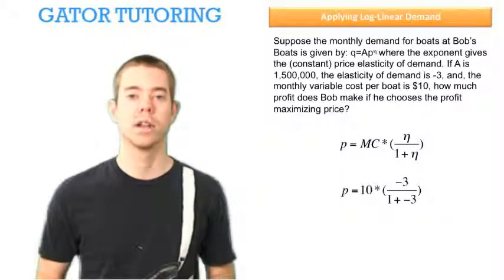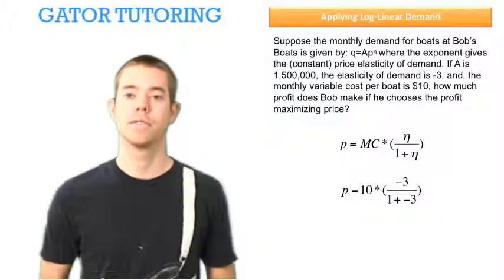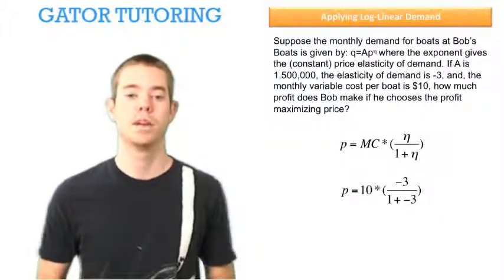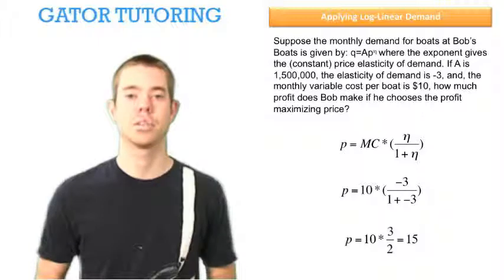We can plug in our components, $10 for marginal cost and negative 3 for the elasticity of demand, and we can solve for our profit maximizing price to be $15.